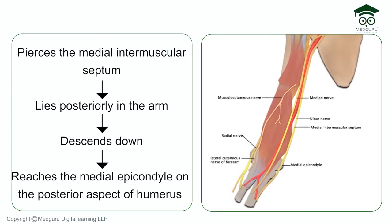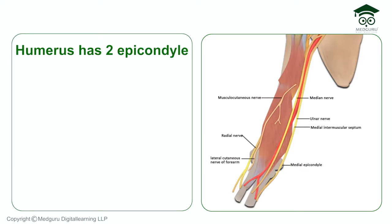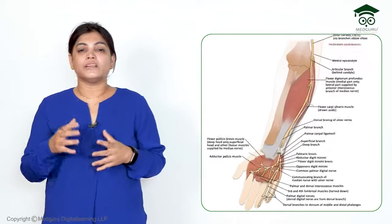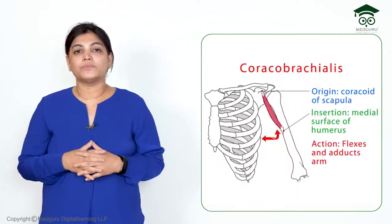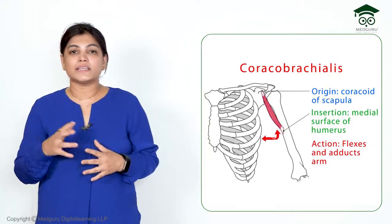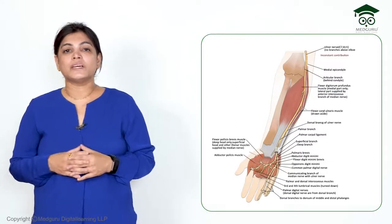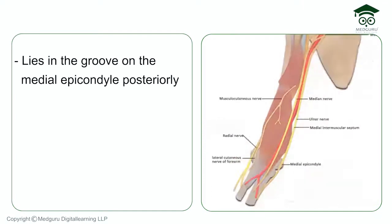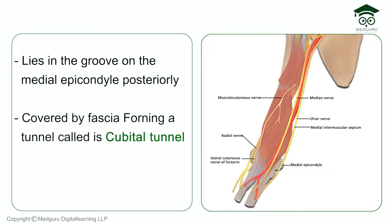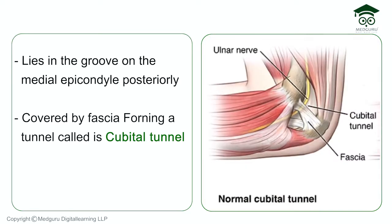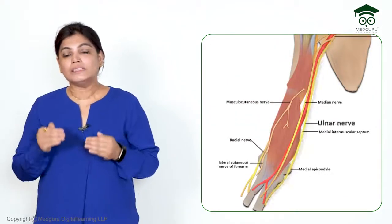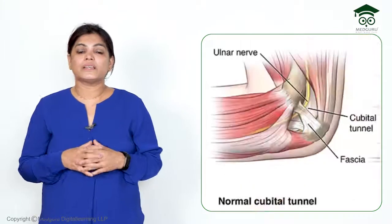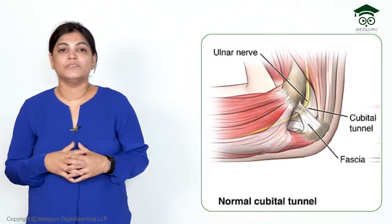After piercing the medial intermuscular septum, the ulnar nerve lies posteriorly in the arm. It descends down and reaches the medial epicondyle on the posterior aspect of the humerus. At this level, it lies in a groove behind the medial epicondyle, which is covered by a fascia forming a tunnel called the cubital tunnel.